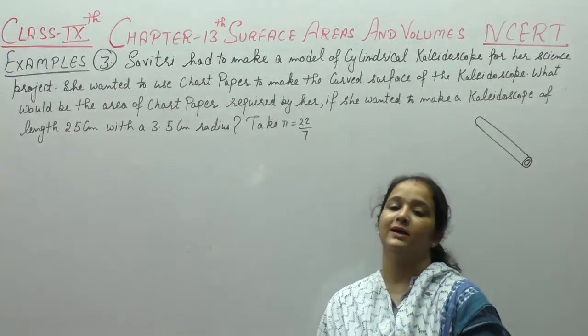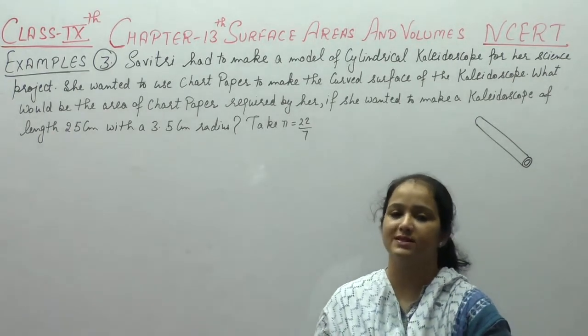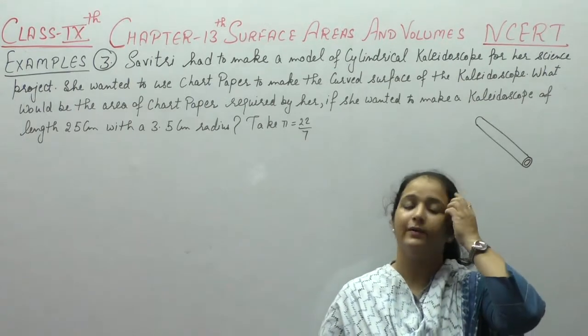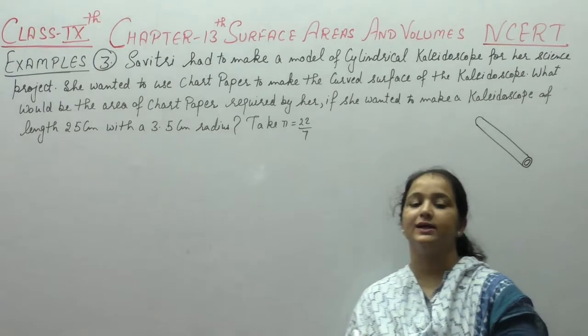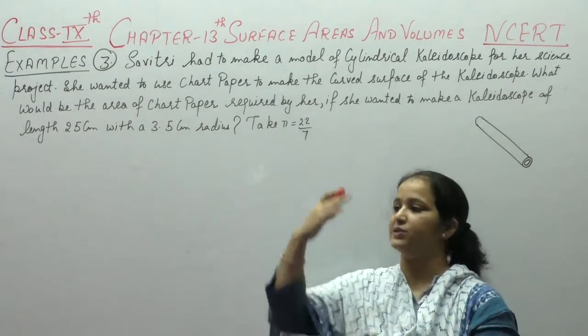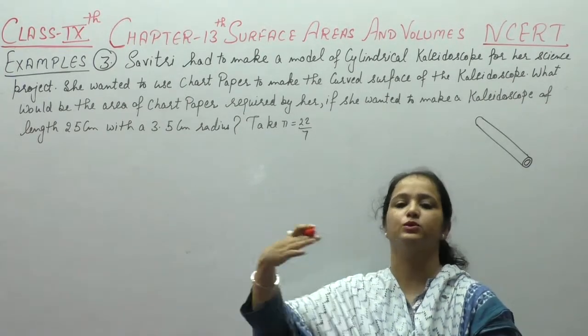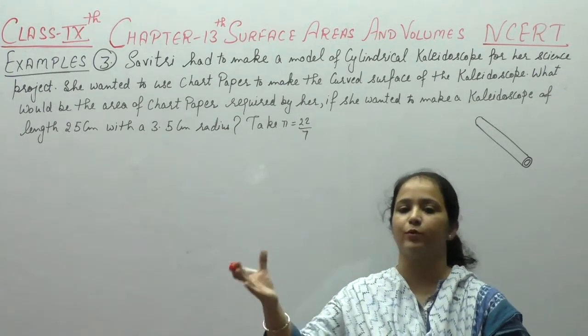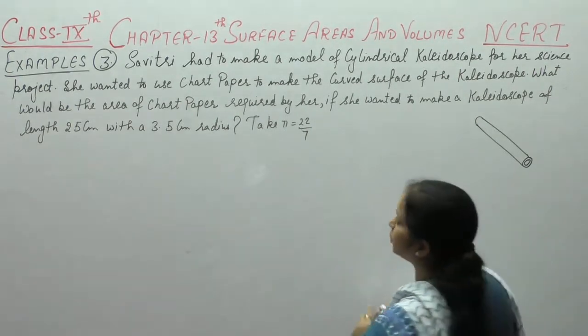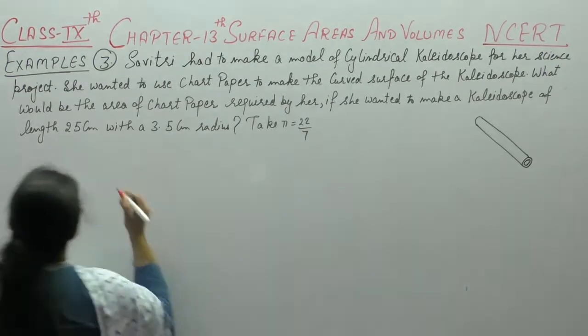What is the kaleidoscope? In which one or two, there are mirrors. If we look from the other end, all of the objects are symmetrical, in the symmetrical position. So let's start with question number 3.